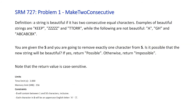So jumping into it, the title of this problem was Make 2 Consecutive. It starts off with a definition of a string, saying that a string is beautiful if it has two consecutive equal characters. Examples of beautiful strings are 'keep', 'zzzzzz', and 'ttorr', while the following are not beautiful: 'a', 'g', 'h', 'a', 'b', 'c', 'a', 'b', 'c', 'b', 'x'. So all you need is to have two characters in the string that are equal and adjacent to each other.